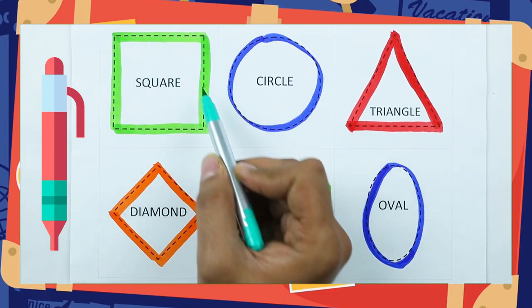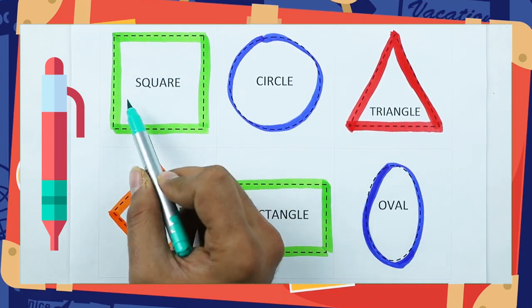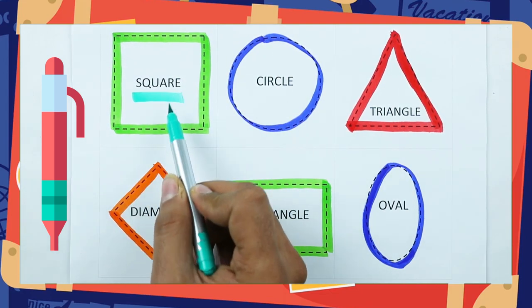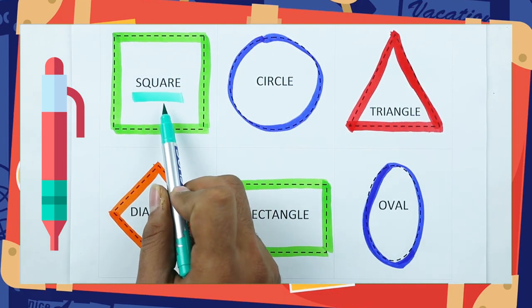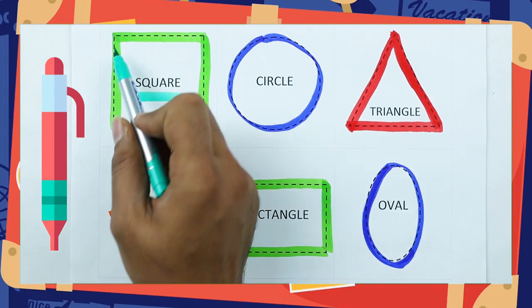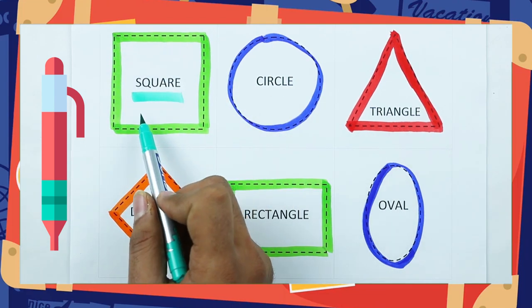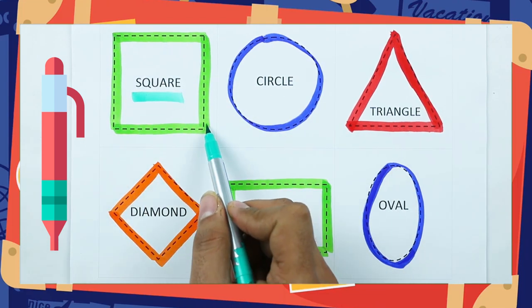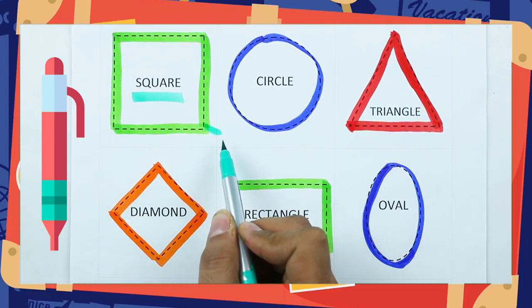Which shape is this? Tell me — square. S-Q-U-A-R-E. It's a square, with green color.